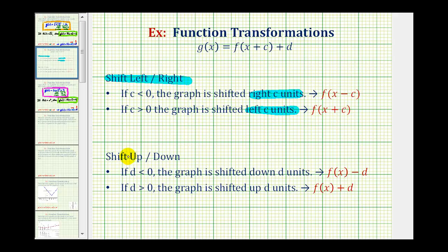And for shifting up or down: if d is negative or less than zero, the graph is shifted down d units, so we'd have f of x minus d. And if d is positive, the graph is shifted up d units, so we'd have f of x plus d. Okay, I hope you found this helpful. Thank you.